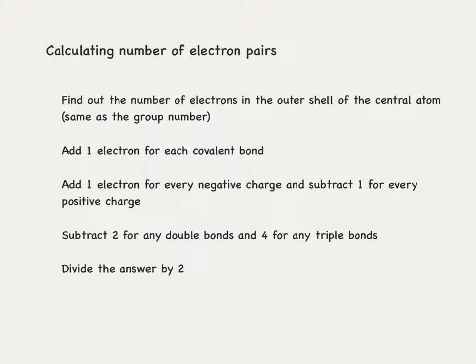The first thing we have to be able to do is calculate the number of electron pairs around the central atom. Step number one is to find out the number of electrons in the outer shell of the central atom, which is the same as the group number.